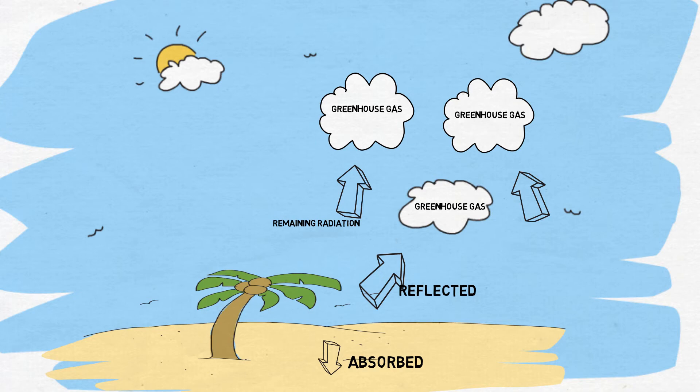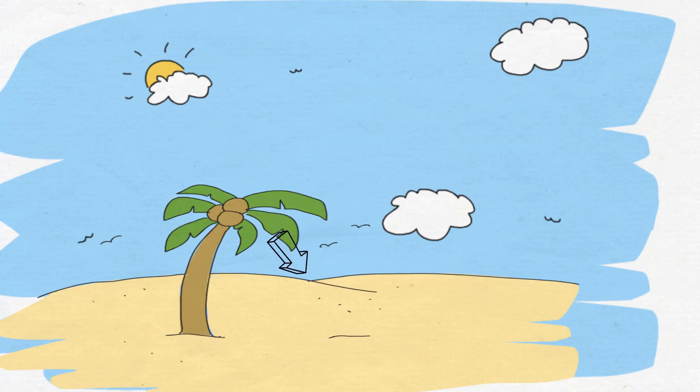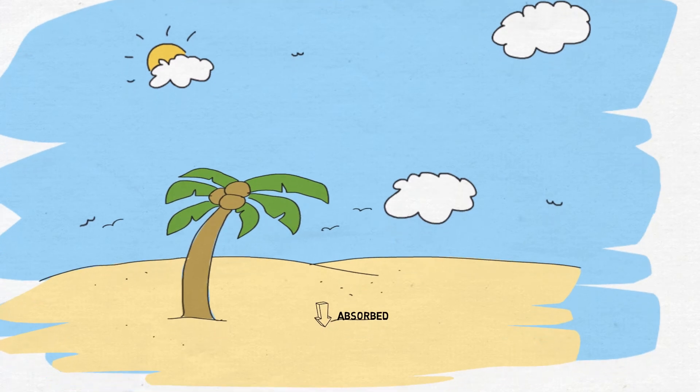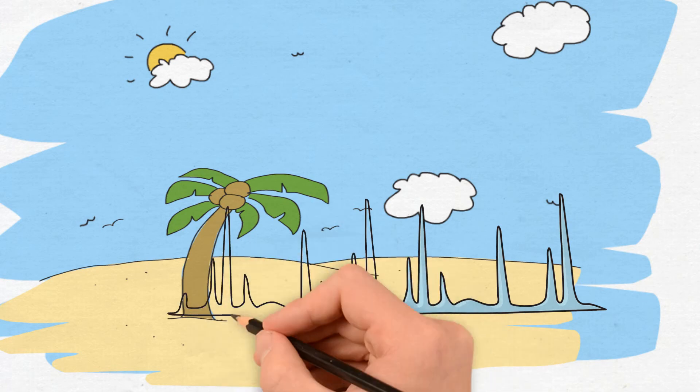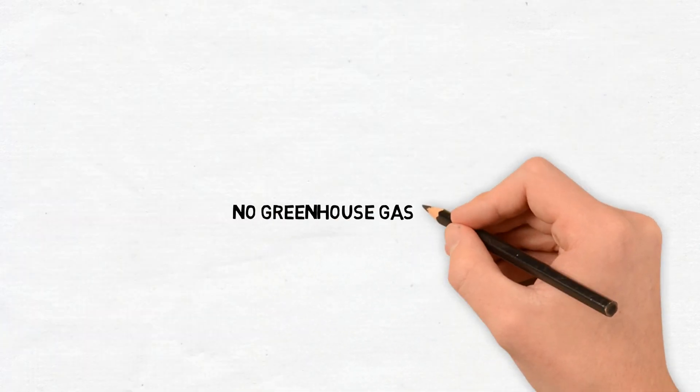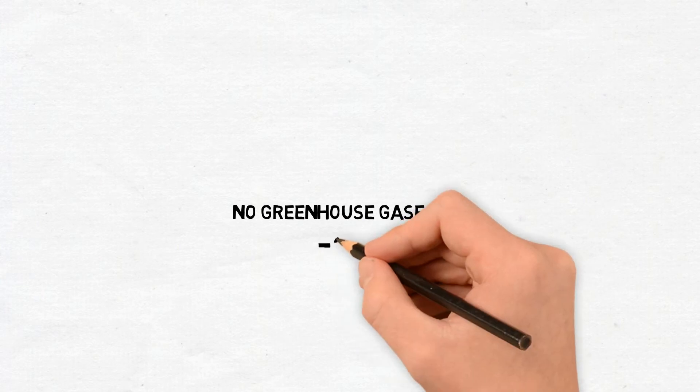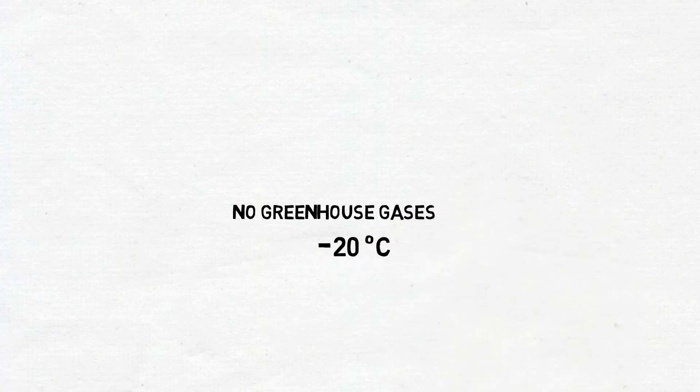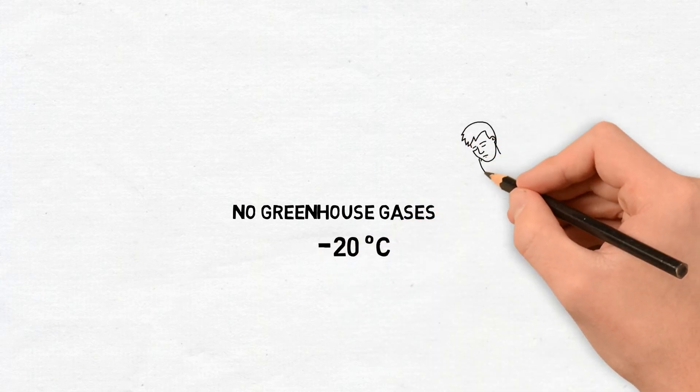But what if there are no greenhouse gases at all? Then, the incoming radiation from the sun will almost entirely be reflected back into space, with only a small amount being absorbed by the Earth's surface. This could lead to an ice age, as temperatures will fall below zero degrees, because there are no greenhouse gases in the atmosphere to store the incoming heat from the sun. So, no greenhouse gases means the temperatures on Earth will fall to around minus 20 degrees Celsius, which is not suitable for life.